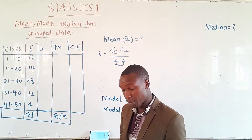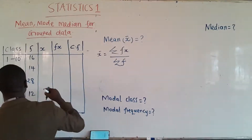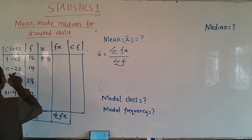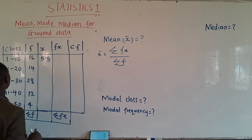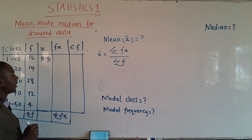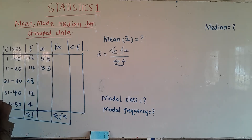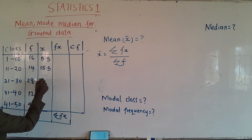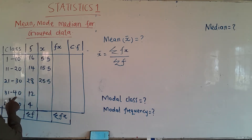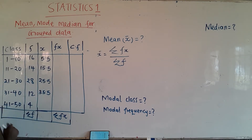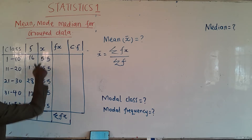The first thing we're going to do is fill in x, which is the midpoint of each class. The first midpoint is (10 + 1) ÷ 2 = 5.5. The next is (20 + 11) ÷ 2 = 15.5. Then (30 + 21) ÷ 2 = 25.5. Then (31 + 40) ÷ 2 = 35.5. And finally (41 + 50) ÷ 2 = 45.5.